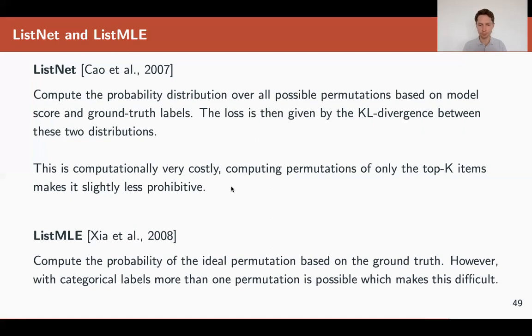And the other approach is List Maximum Likelihood Estimation. It basically computes the probability of ideal permutation based on the ground truth. You consider all the permutations, you have the ground truth, and you compare the two, and you choose the best. But the problem is we have categorical labels and many documents can be labeled as two or four or zero. And the permutations become trickier with that. But just for completeness, we want you to know that these two methods exist and they're also list-wise. That means they try to optimize the whole ranking compared to point-wise or pair-wise approaches.